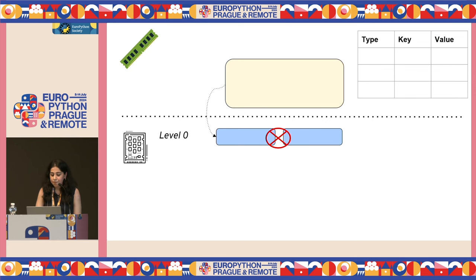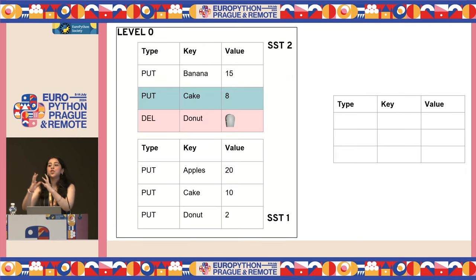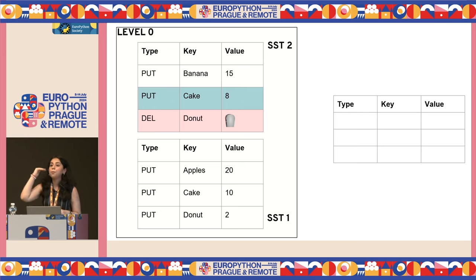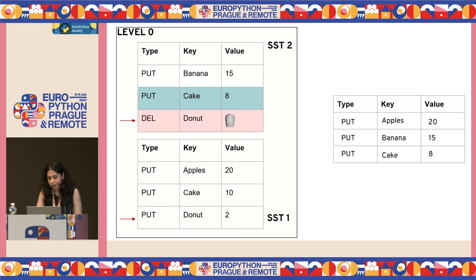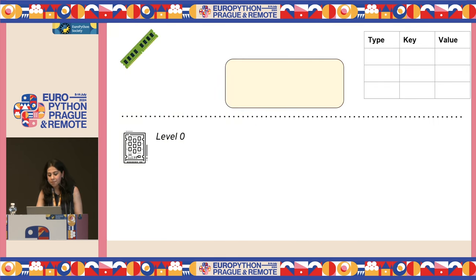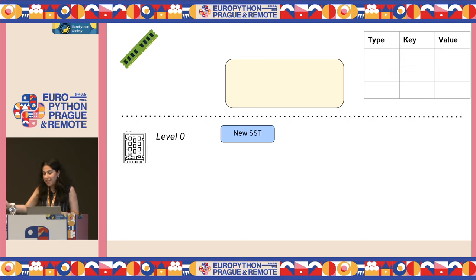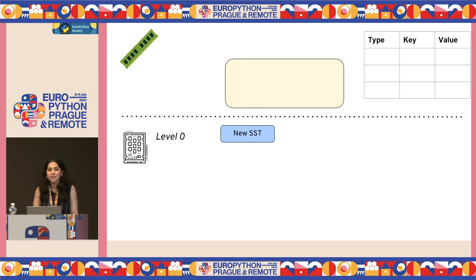Compaction merges the SST files into another SST file — it's very similar to merging two sorted lists. For example, you take apples, you take bananas. For cake, you take the updated value. And in case of deletes, the value would be nullified. This compacted new SST becomes part of level zero, and RocksDB has reclaimed the space and taken care of all the duplicates and deletes which were just cluttering our level zero.